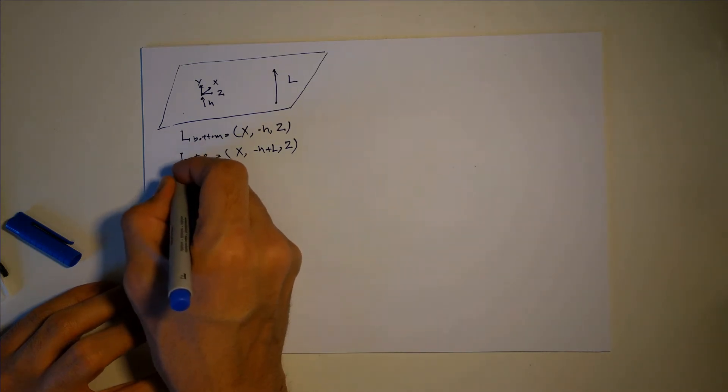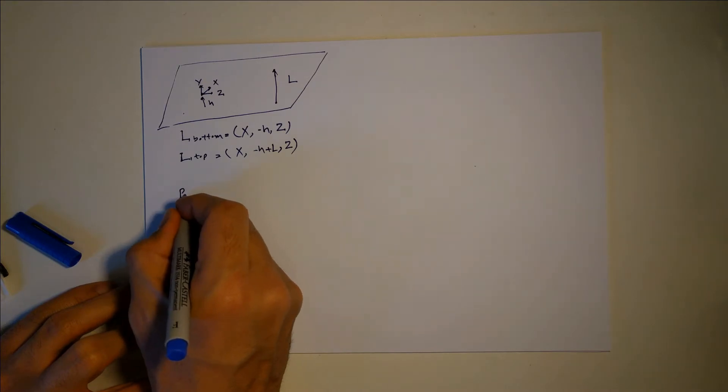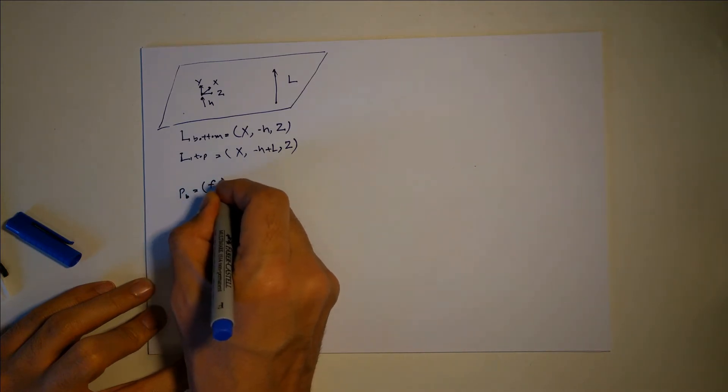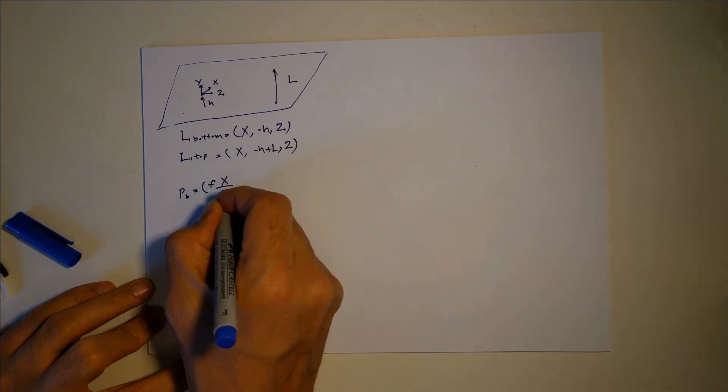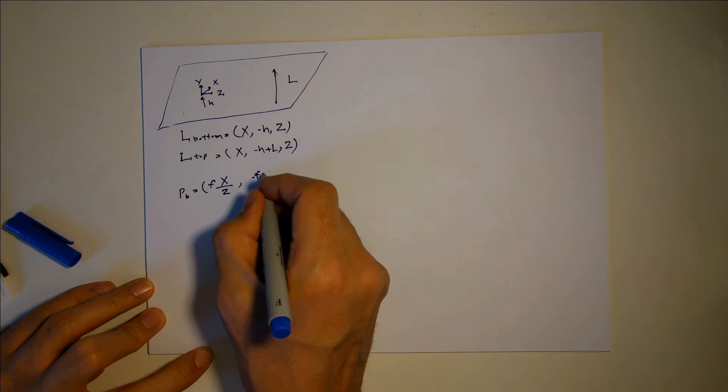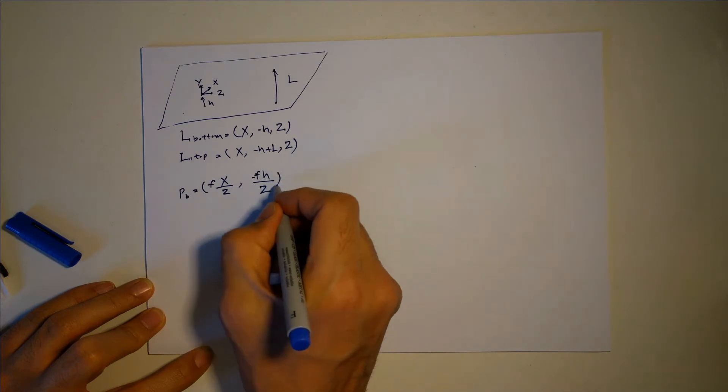So again, from a pinhole model camera, we know that the position of the bottom is going to be f multiplied by x over z and f multiplied by y over z. Basically, x over z and y over z multiplied by f.